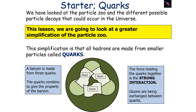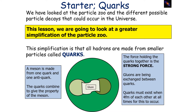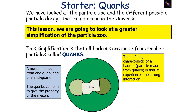This means that gluons are constantly being exchanged between quarks. If it's a meson, a meson is made from one quark, one anti-quark, and the quarks combine to give the property of the meson. The force holding the quarks together is the strong interaction, so the gluons are being exchanged. The quarks must exist within four femtometers of each other at all times. The defining characteristic of a hadron is that it experiences the strong interaction, as it's the strong interaction that holds these quarks together as either triplets or pairs.